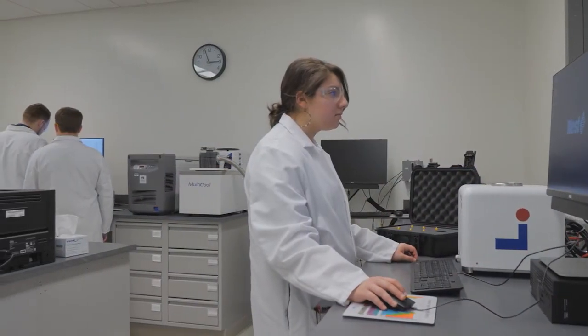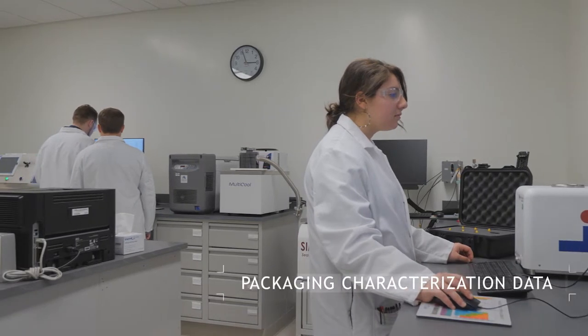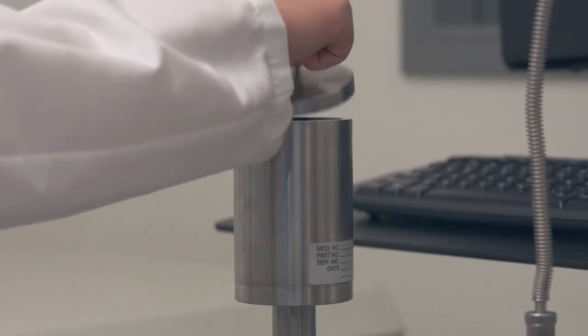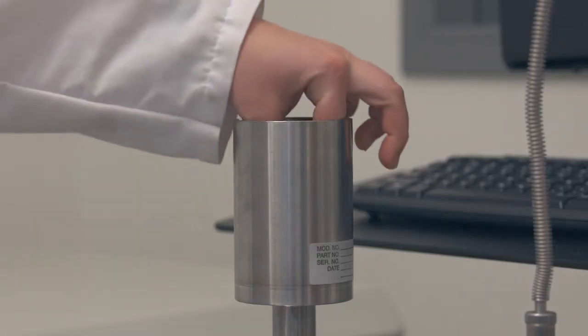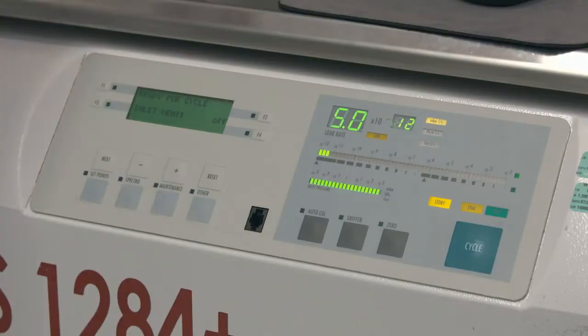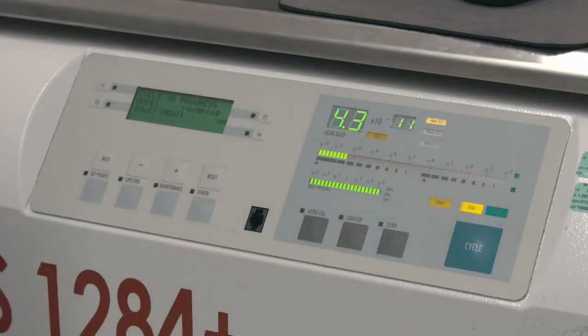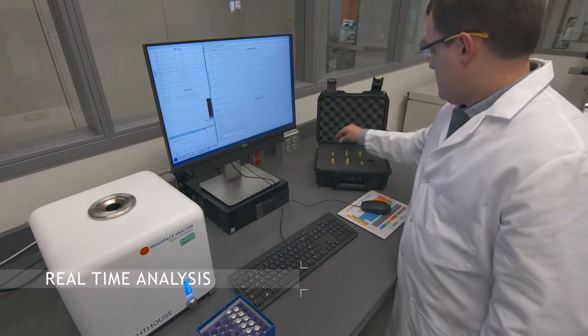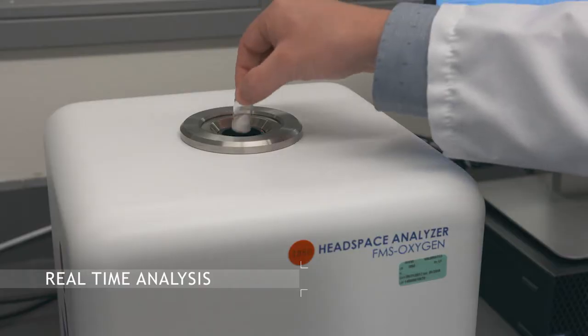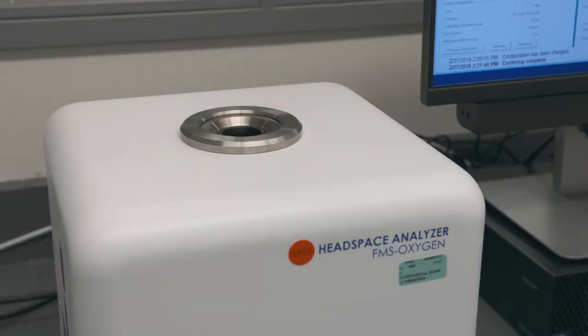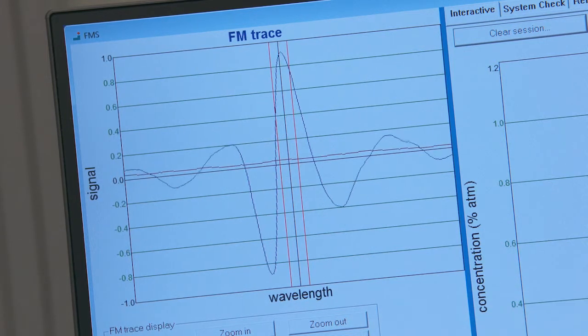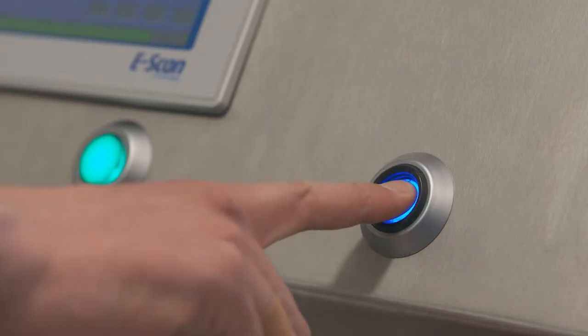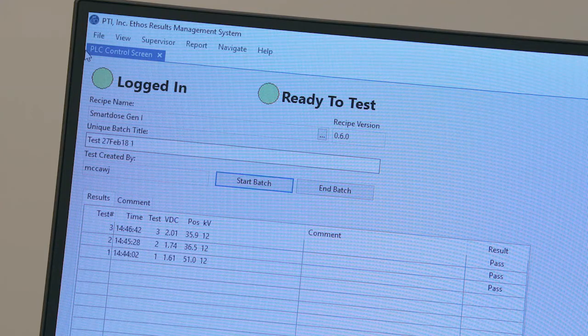With a lab built around USP chapter 1207 guidance, West's container closure integrity experts provide packaging characterization data as well as validated methods and data for a regulatory filing or submission. With a focus on unmatched customer support and the technical expertise to design and execute a variety of studies, partnering with CCI experts at West helps ensure not only the integrity of your package, but also the safety of your product and patients. Our extensive portfolio of CCI techniques and analysis are based on package type, product fill, and storage condition.